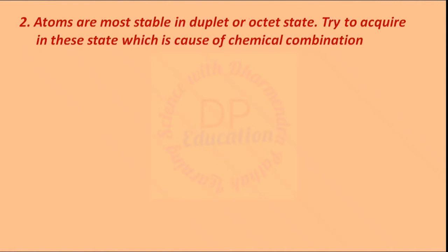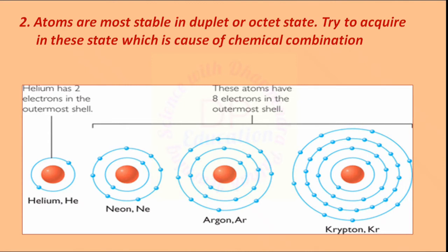Atoms are most stable in the duplet or octet state. They try to acquire this state, which is the cause of chemical combination. Atoms try to be in the duplet state like helium, or in the octet state like neon, argon, krypton, etc.